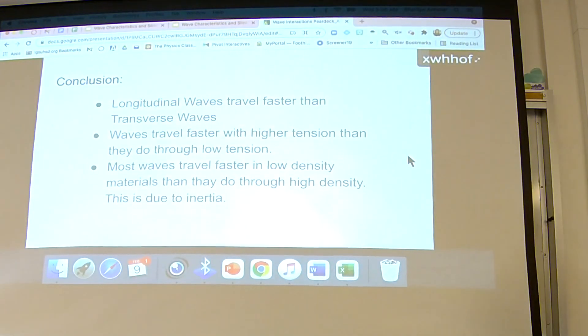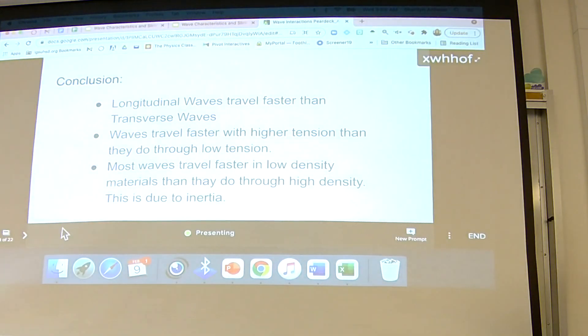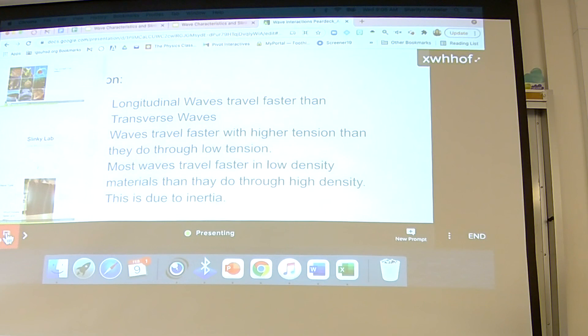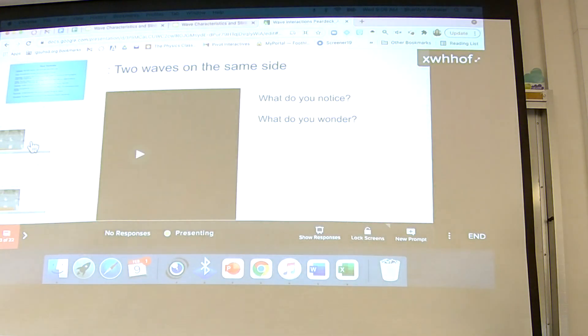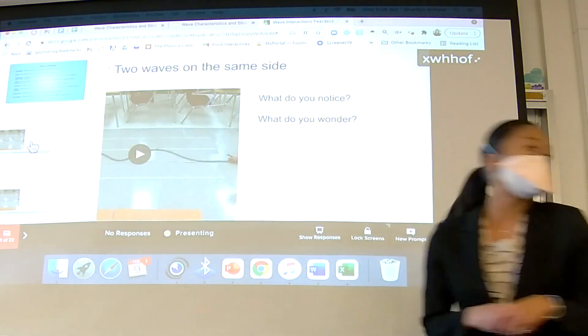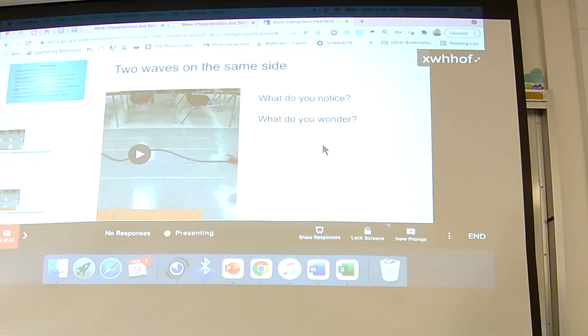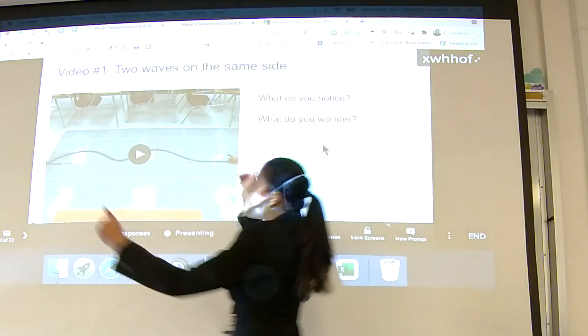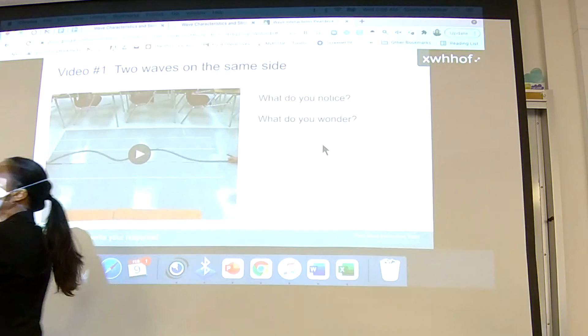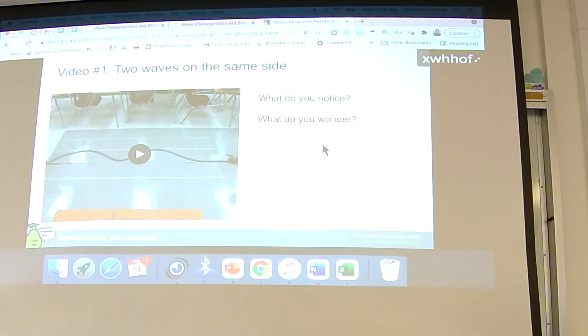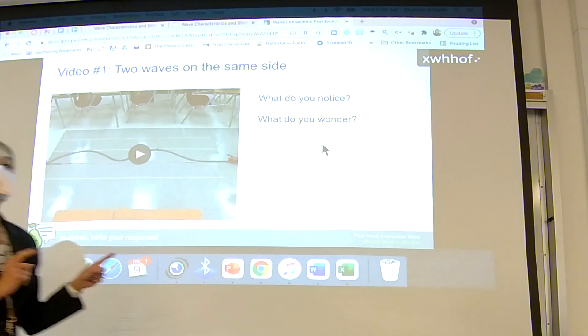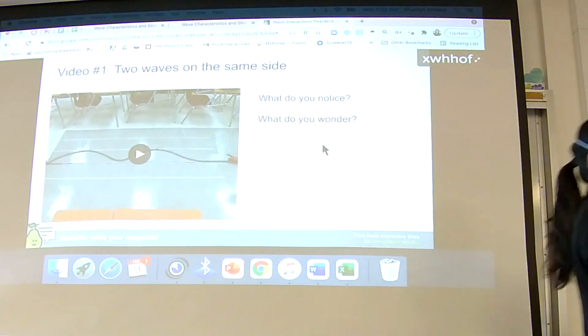Longitudinal is faster, high tension is faster, and then make sure, for those of you who didn't get this correct, low density is faster. All right, we already watched the next two slides, which were the videos of the guitar, so I'm going to move on to analyzing wave interactions. So when you see two waves interacting here, as I play this video, I want you to very carefully look and see what happens when they combine. What do you notice? And then what are your questions about what's happening?